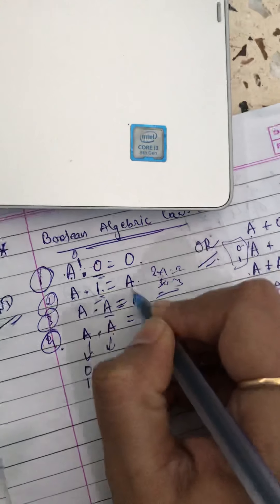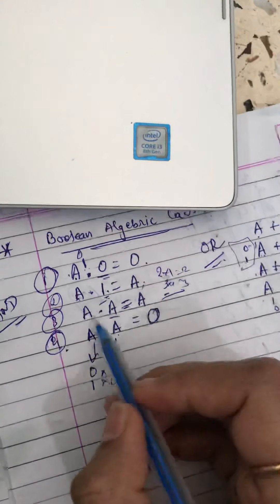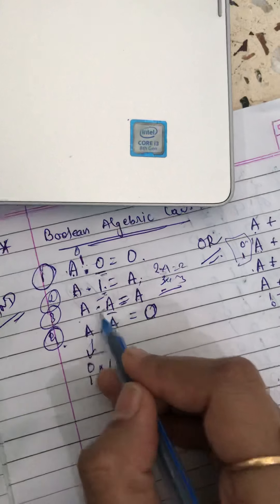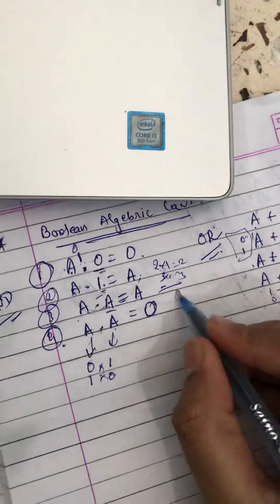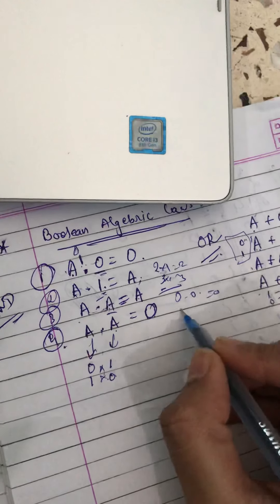The third one is multiplication of the same number. If it is zero times zero, you will get zero, and if it is one times one, you will get one. So A times A will be A.